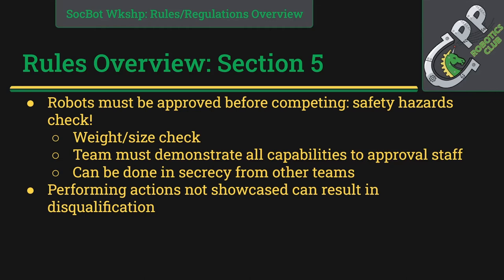Section 5 is the robot approval process. Before you're truly allowed to compete, we'll check your robot — a weight and size check to make sure it's under one foot in all directions and less than two pounds. You also need to demonstrate all the capabilities of your robot for safety. If your robot does something that could injure someone, that's a problem. You must show all techniques to us, but if you're worried about other teams seeing them, you can show us in secrecy. Actions not showcased could result in disqualification on safety grounds.